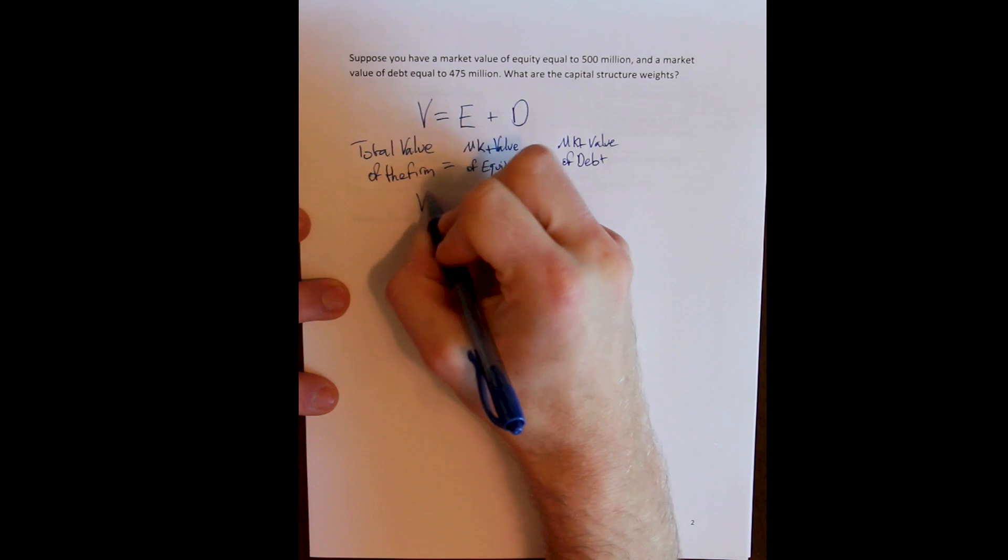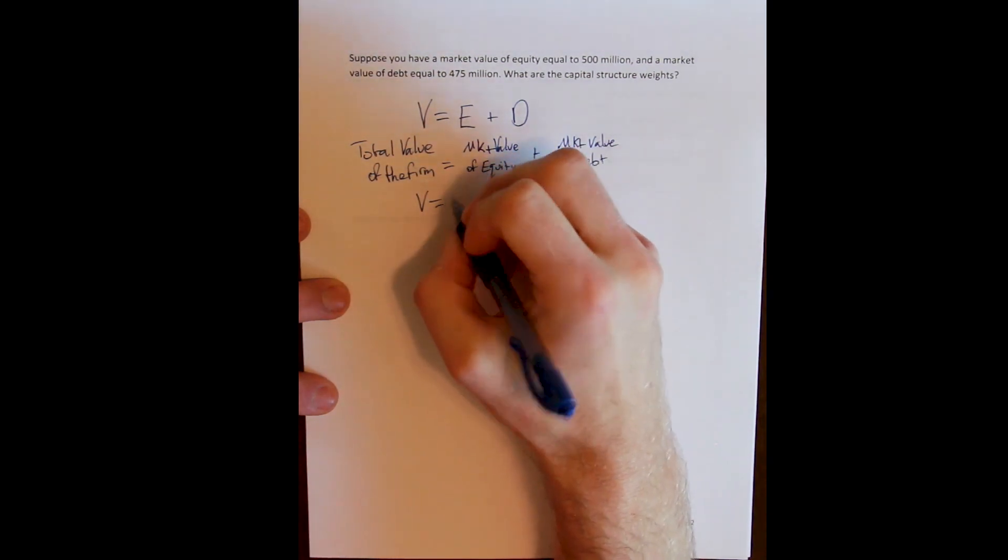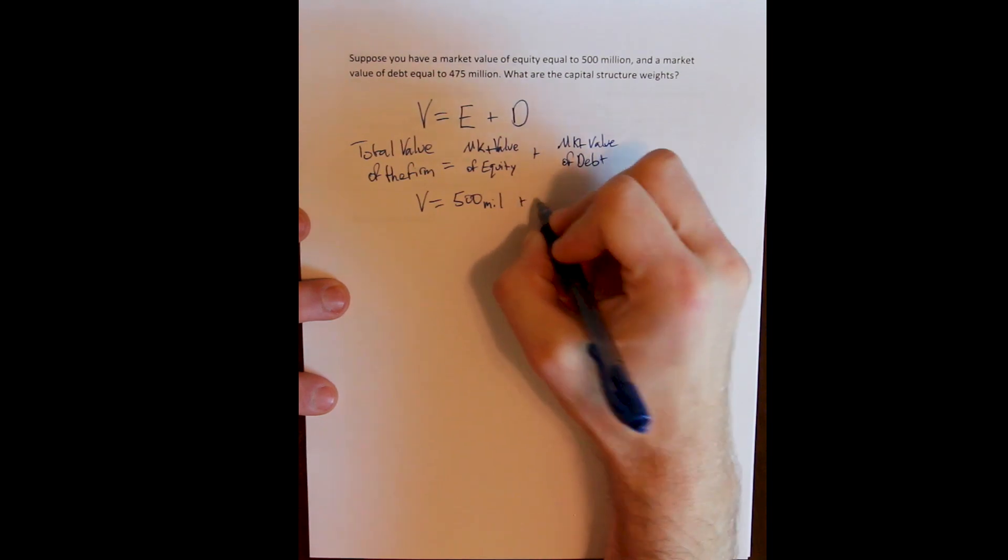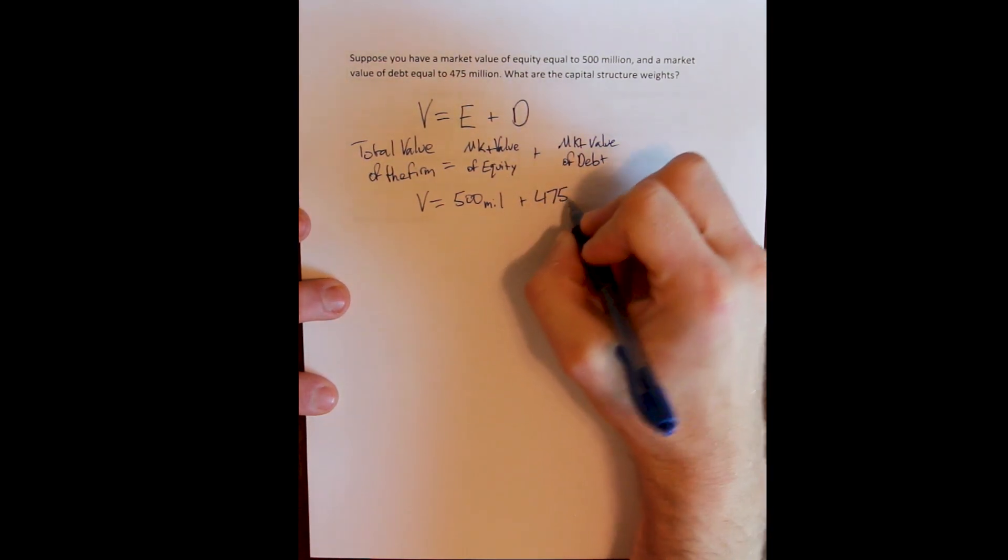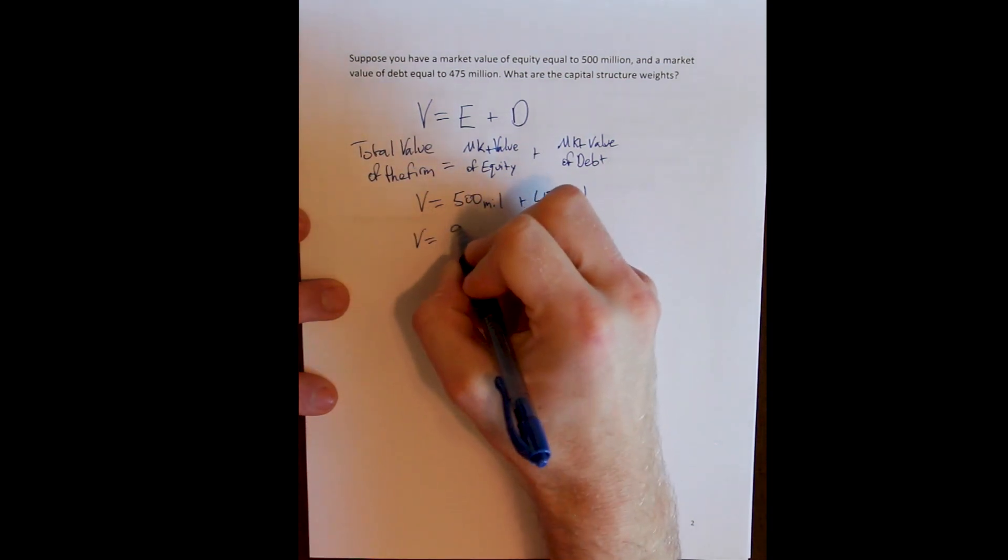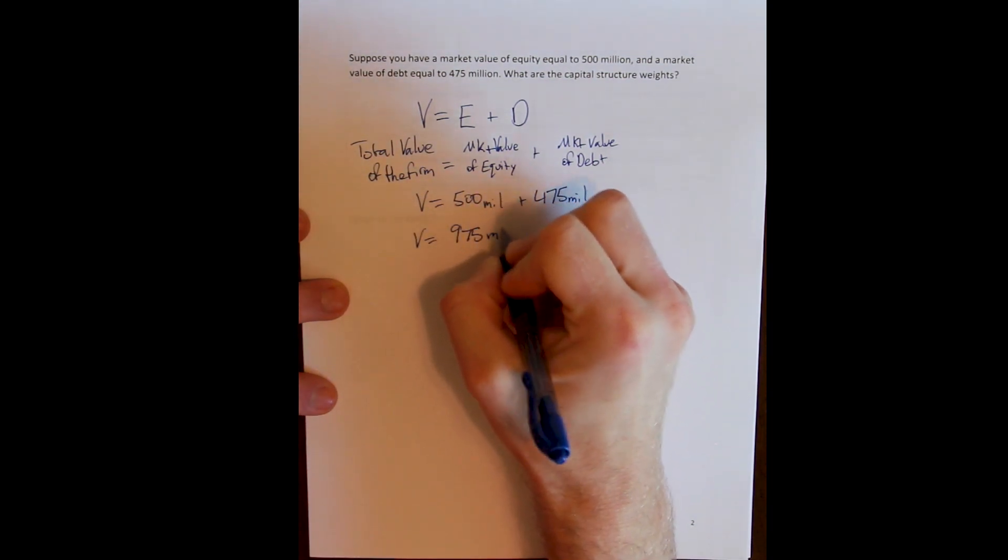And so for us, that's pretty straightforward. We're given the market value of equity, 500 million, and we're given the market value of debt, 475 million. So the total value of the firm then has to be 975 million.